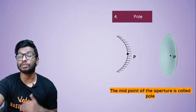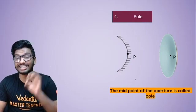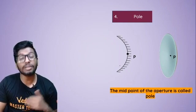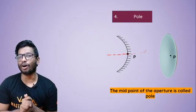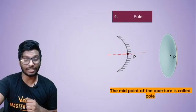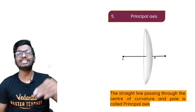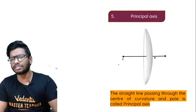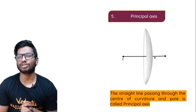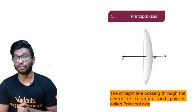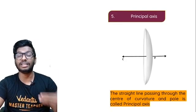The fourth term is the pole of the mirror. The pole is the midpoint or center of the spherical mirror — the midpoint is more accurate. So the midpoint of the spherical mirror is called the pole. And finally, the principal axis — an imaginary line which joins the center of curvature and the pole of the mirror, passing through both of them. That line is called the principal axis, where the focus of the mirror would also lie.